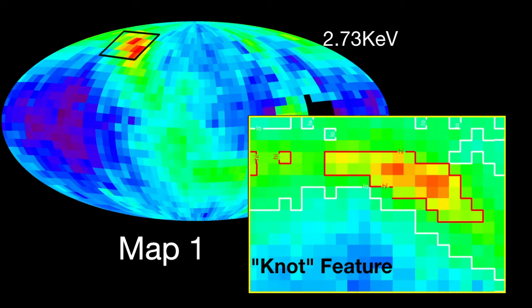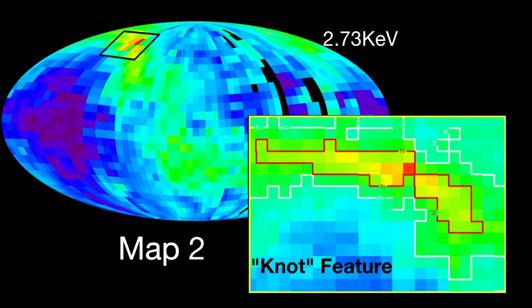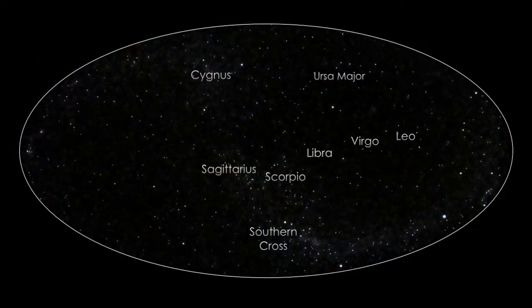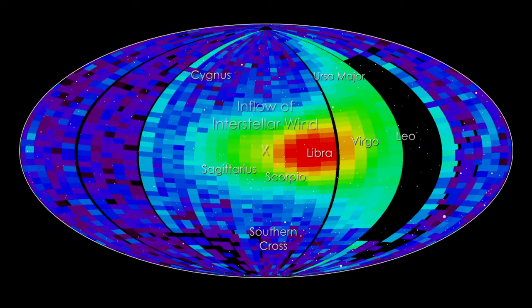Subsequent measurements show that this ribbon changes over time. IBEX has also measured ENAs from the interstellar wind, giving scientists a clearer picture of its composition.